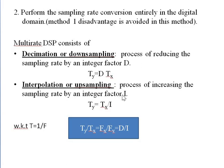Looking at the relationship: T_y / T_x equals D for decimation or 1/I for interpolation, which we can write as T_y / T_x = D/I, and this also equals f_x / f_y. For decimation: f_x = D * f_y, giving f_y = f_x / D. For interpolation: f_y = f_x * I. These two definitions and formulas are very important — please read them carefully.